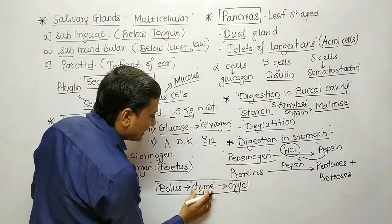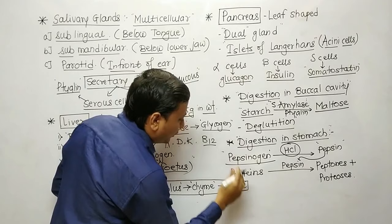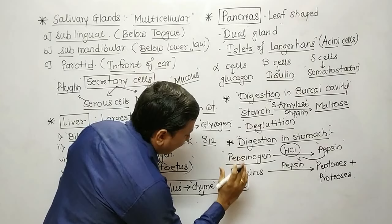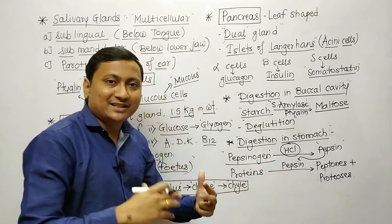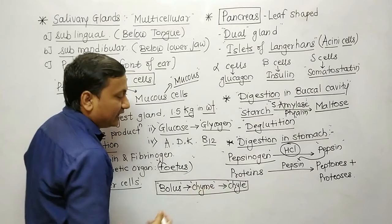The digested food present in the intestine, as it passes to the next alimentary organ, is known as chyle. So: in the buccal cavity, food is called bolus; in the stomach, it is called chyme; and in the intestine, it is called chyle. Food has different names at different locations.